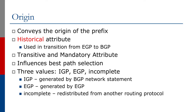The final value, incomplete, means the prefix has been redistributed from another routing protocol. If you think back to how we introduced prefixes into BGP using the redistribute static command, you will find that if you redistribute static into BGP, all those entries will be marked with an origin of incomplete when you view them in the BGP table. Prefixes that are generated by the network statement are indicated by origin IGP. And if you wish, you can use policy language on your router platform to manually set the origin to EGP.